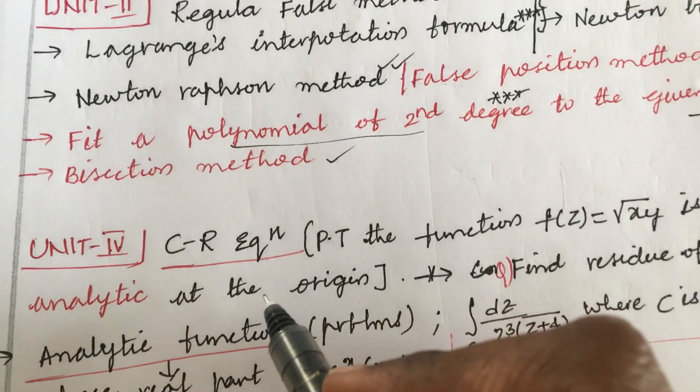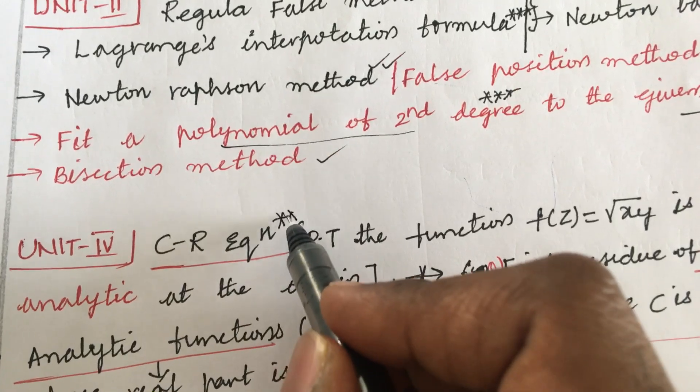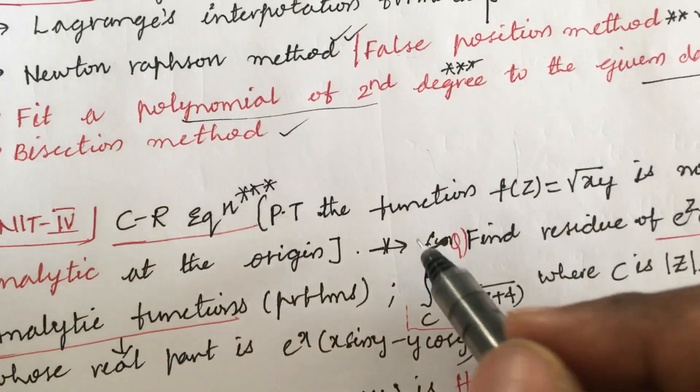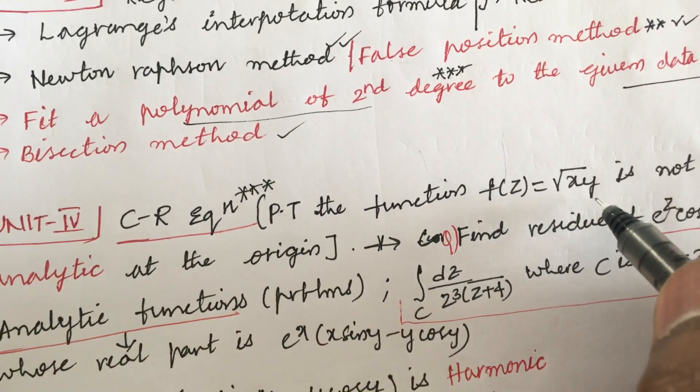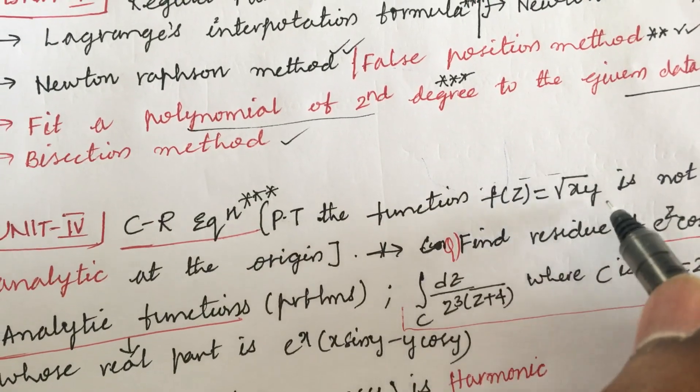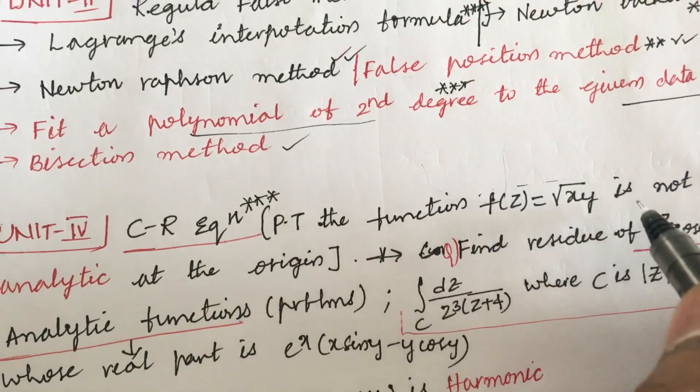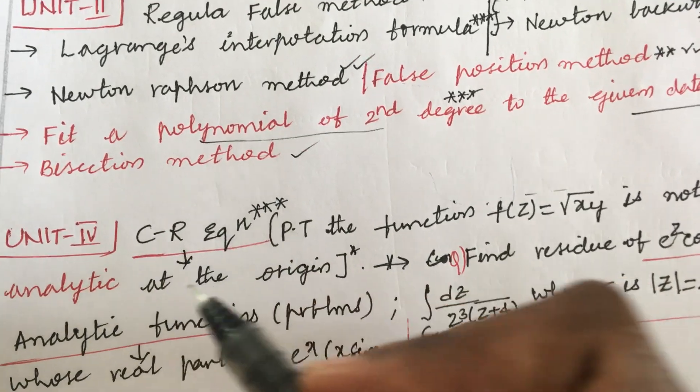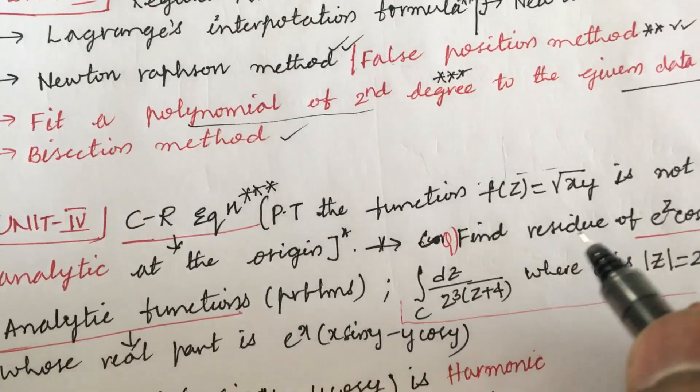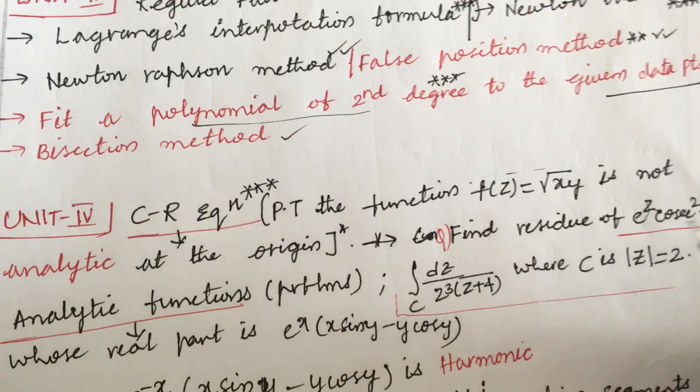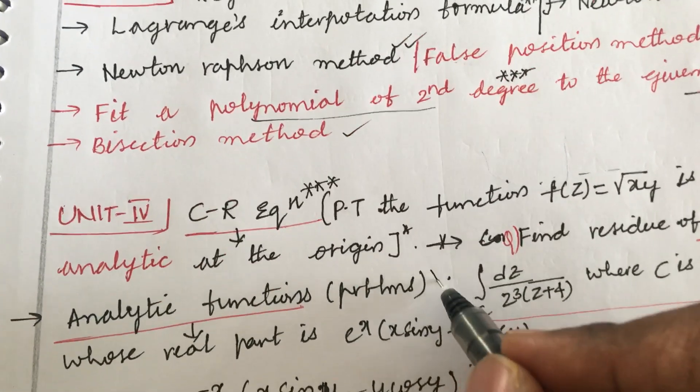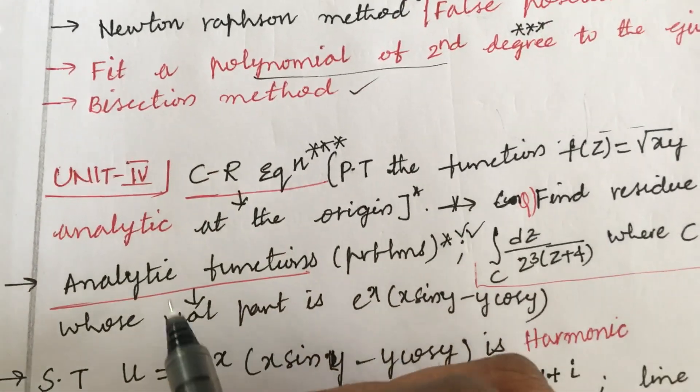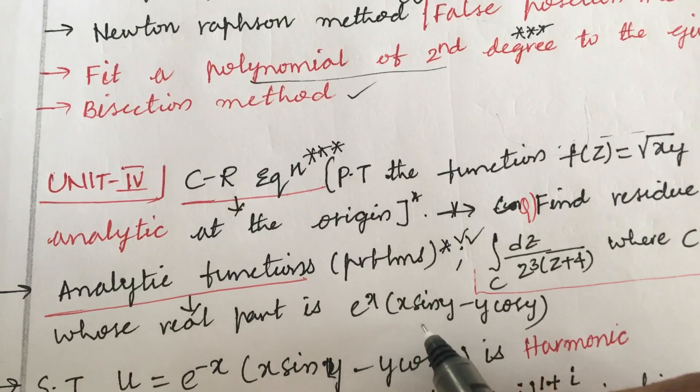Later the unit 4 you are supposed to work out. CR equation is set to be the top most question like the question will be prove that the function f(z) equals to square root of xy I have taken only for sample example consideration, this may change, is not analytic at the origin. You are supposed to work out whether it is analytic or not by using the CR equation. Analytical functions and the problems is very very important this time where whose real part is e to the power x times x sin y minus y cos y such type of relations will be given.